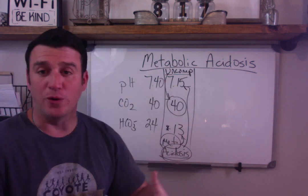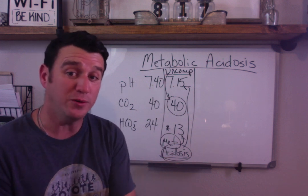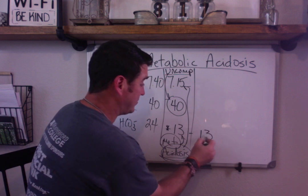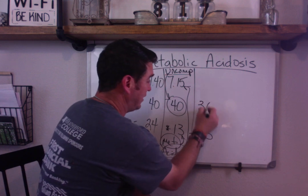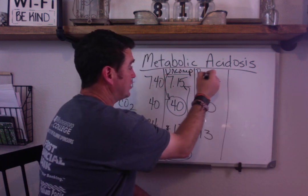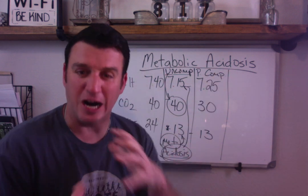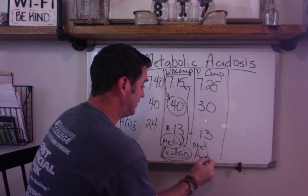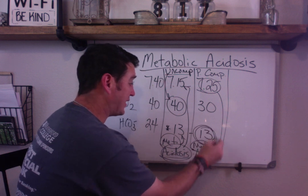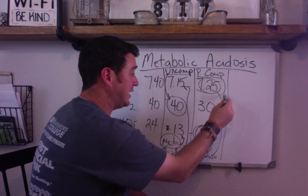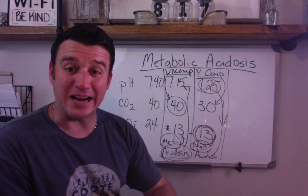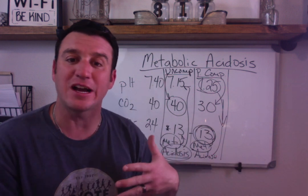From here, the body is going to try to compensate for this metabolic acidosis by getting rid of acid — it's going to hyperventilate our CO2 down. So let's say our bicarb stays at 13, our CO2 goes down to 30, and our pH goes up to 7.25. This is a partially compensated — or some say compensating — metabolic acidosis. It's an acidosis because we're still on the acidotic side, it's metabolic because the bicarb is causing the acidosis, and it's partially compensated because our CO2 has gone down, which is helping pull our pH up, but it hasn't gotten it back into the normal range yet — which is why you can't call it fully compensated.